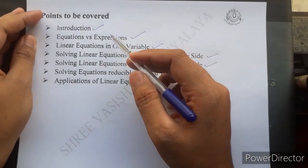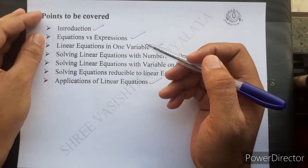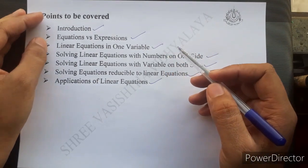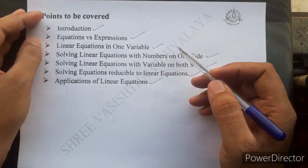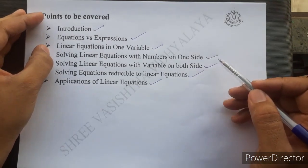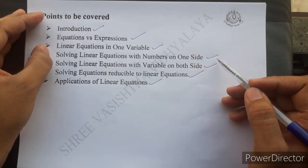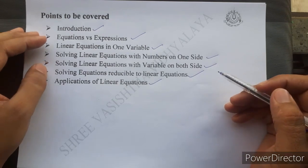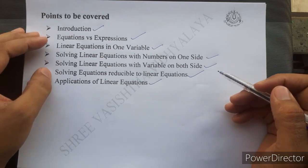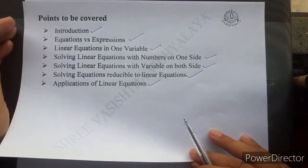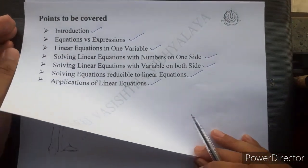First, Introduction. Second, Equation versus Expression. Then, Linear Equation in One Variable — Solving Linear Equation with Number on one side, Solving Linear Equation with Variable on both sides, Solving Equation Reducible to Linear Equation, and then Application of Linear Equation.